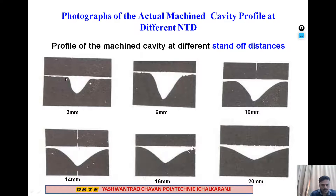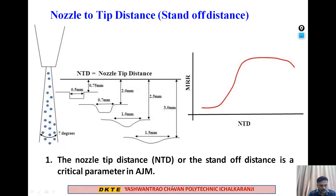At a nozzle tip distance of 2 mm, a perfect cavity is produced. At 6 mm, the stream is at maximum spread. The cutting rate is highest at around 10 mm standoff. Therefore, the nozzle tip distance is a very critical parameter in abrasive jet machining.